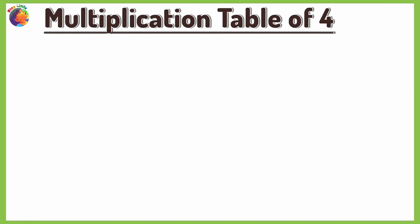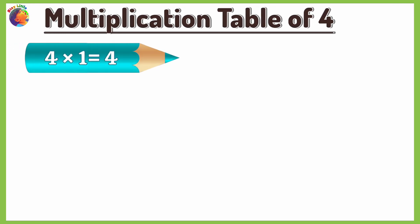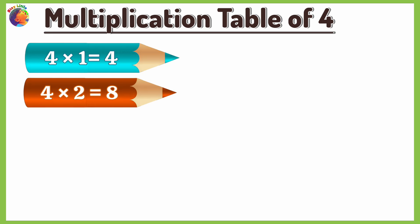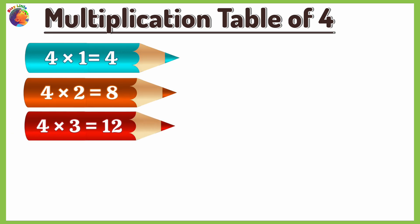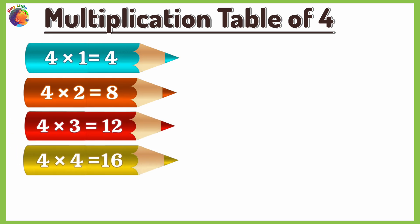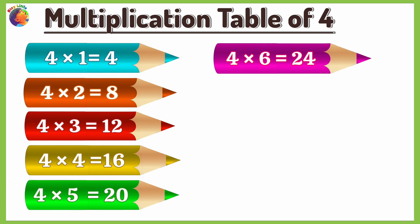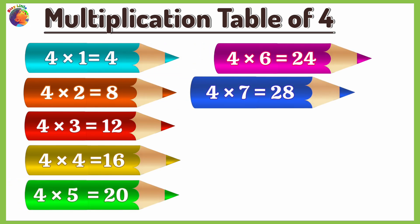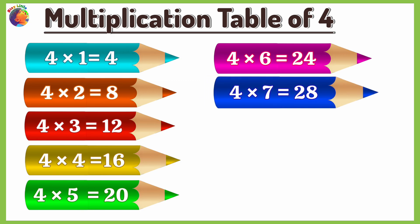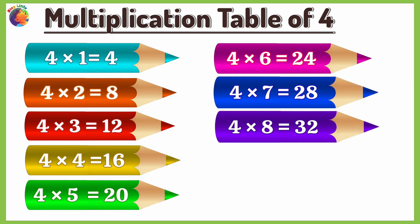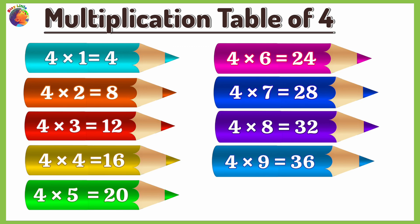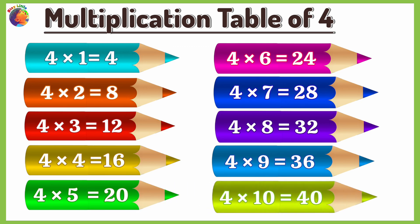Multiplication Table of 4. 4 times 1 is 4, 4 times 2 is 8, 4 times 3 is 12, 4 times 4 is 16, 4 times 5 is 20, 4 times 6 is 24, 4 times 7 is 28, 4 times 8 is 32, 4 times 9 is 36, 4 times 10 is 40.